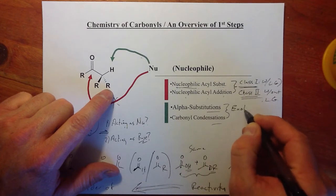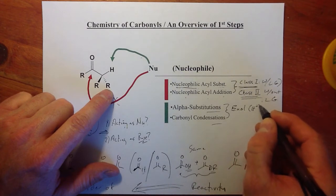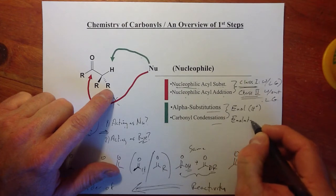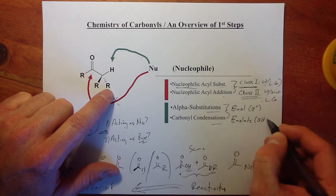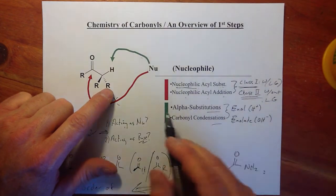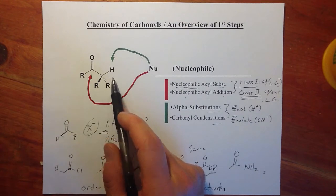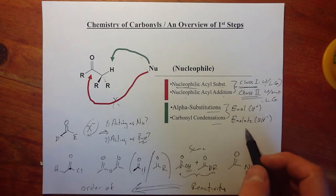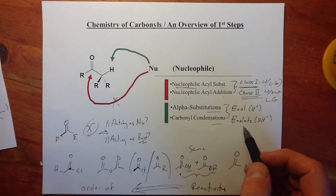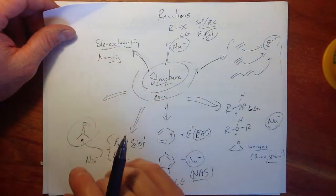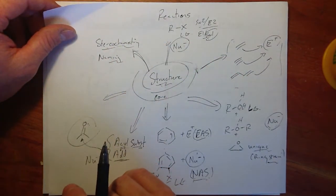Enol chemistry will be in acid conditions, and enolate chemistry in base conditions. So we're going to talk about this alpha proton being abstracted by something in solution, whether in acid solution or in base solution. And that's going to be really the end of the story for the most part — this long journey that we've taken through OChem.